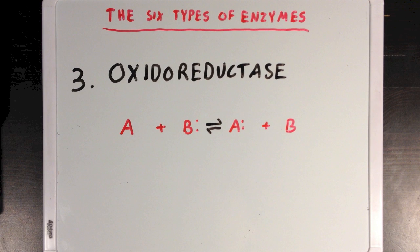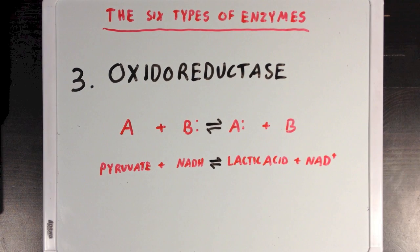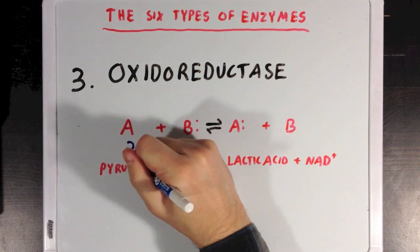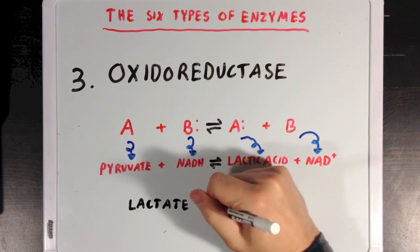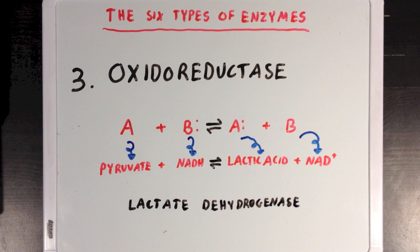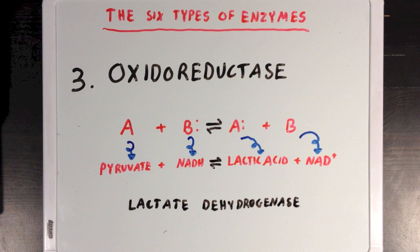That's why equilibrium arrows are used here instead of a single-headed arrow. A great example of an oxidation-reduction reaction occurs during lactic acid fermentation, where electrons are either passed from NADH to pyruvate, or from lactic acid to NAD⁺. This reaction is catalyzed by an enzyme called lactate dehydrogenase. The word 'dehydrogenase' refers to the removal of a hydride functional group, which is the same as saying the removal of electrons, since hydrides are hydrogen atoms with two electrons rather than one. This enzyme is named since it's able to remove a hydride, or remove electrons, from a molecule of lactic acid.